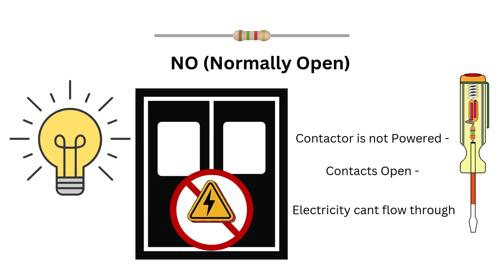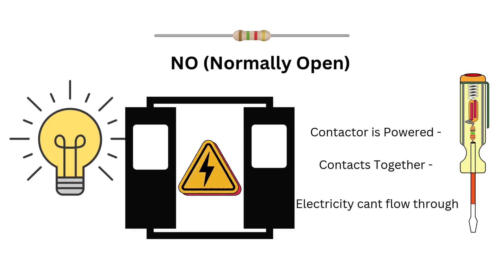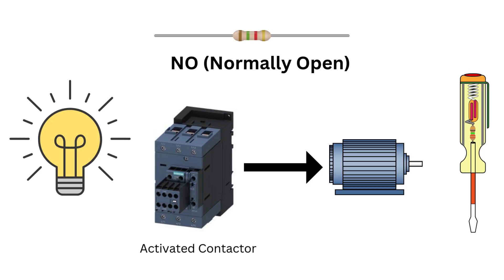Let's start with NO, or normally open. Imagine the contacts are like a door. When the contactor is not powered, the contacts are open — the door is shut — and no electricity can pass through. But when the contactor is powered up, it pulls the contacts together and the door swings open. Now electricity can flow and the connected device turns on. In a typical NO setup, power won't reach the device until you activate the contactor. This is why it's used for things like motors, where you only want power flowing when you intentionally activate the system.